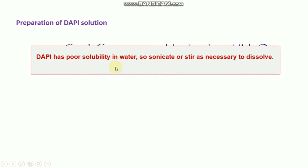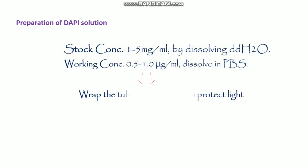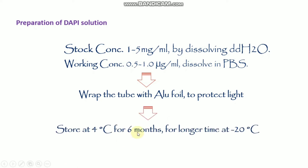If sonication or heating is needed, you should do that. After dissolving, wrap the tube in aluminum foil to protect it from light. For short-term storage of up to 6 months, store at 4 degrees Celsius. For longer-term storage, keep it at minus 20 degrees Celsius.